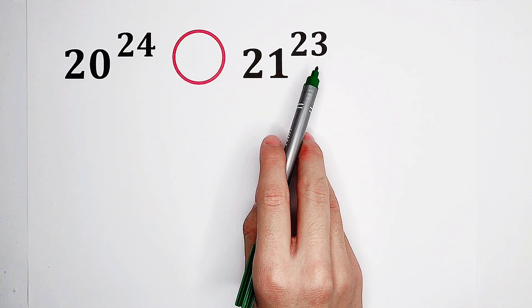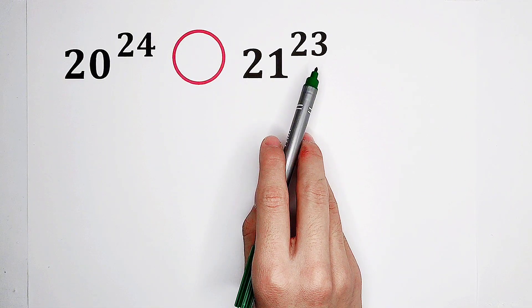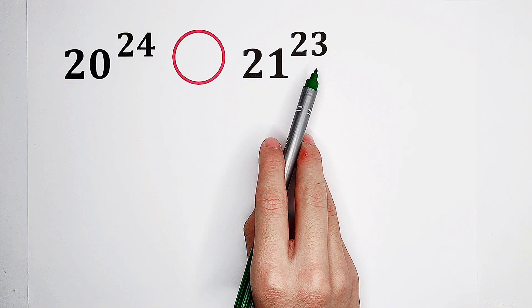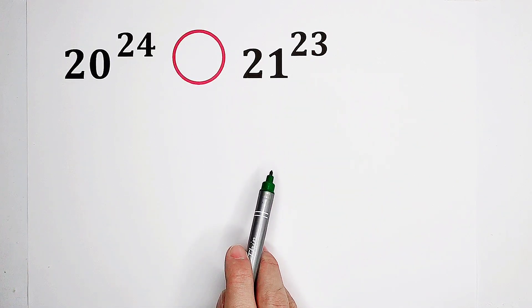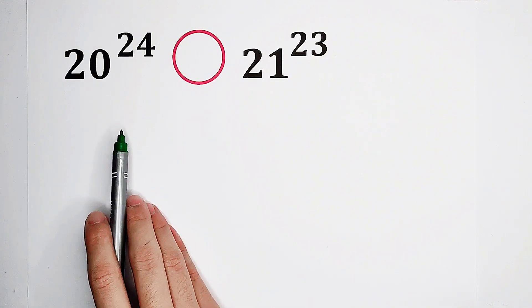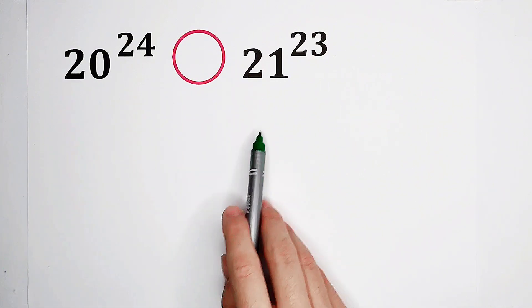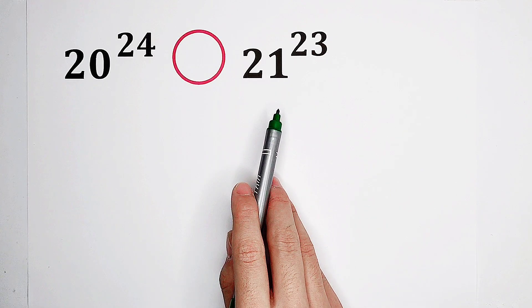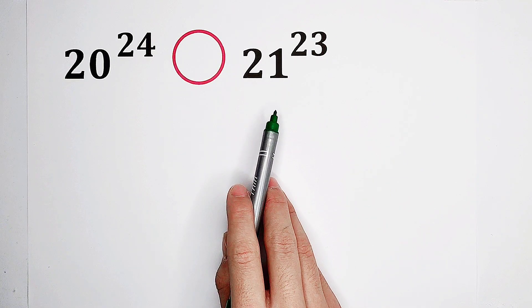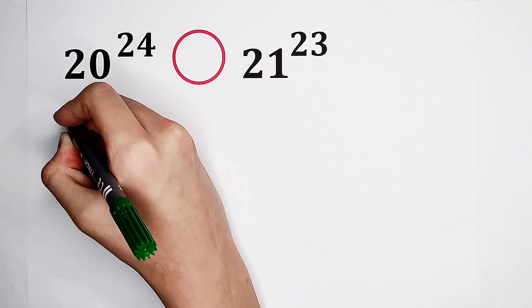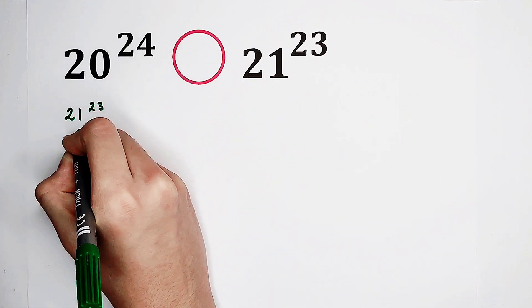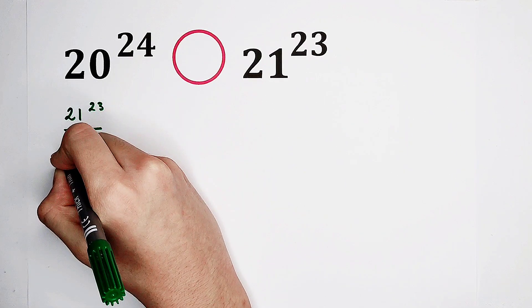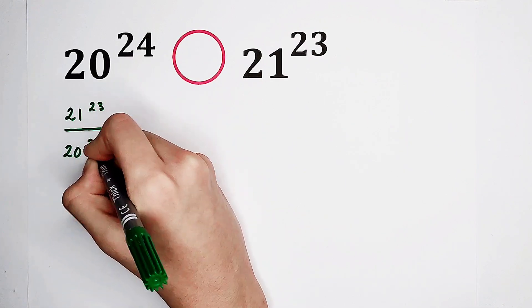Look, 24 and 23 are the exponents. So, by using which method? Of course, dividing — we let the left-hand side divide the right-hand side. So now, what can we get? That means 21 to the power of 23 divided by 20 to the power of 24.